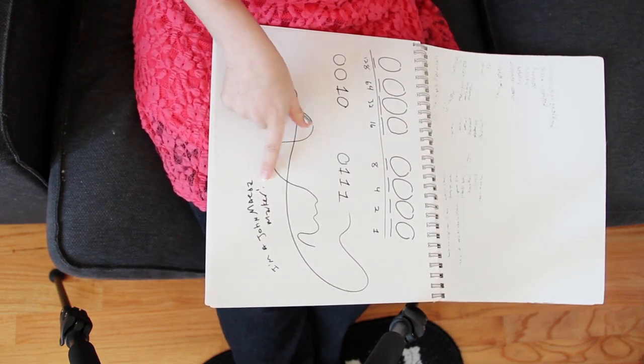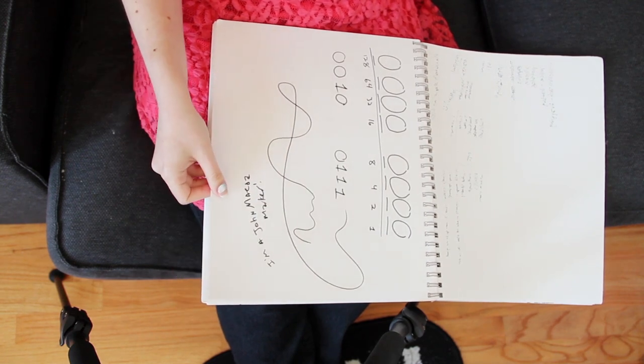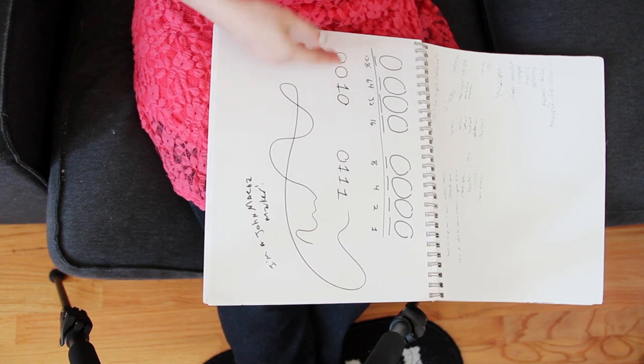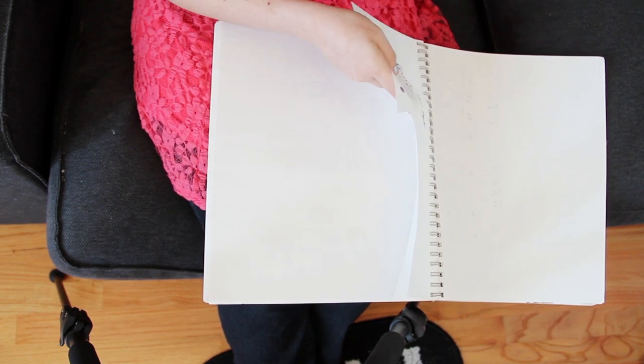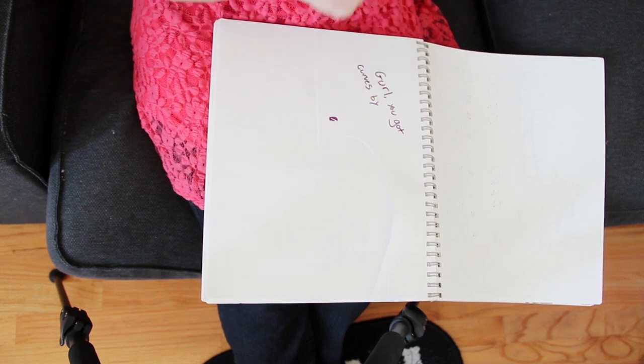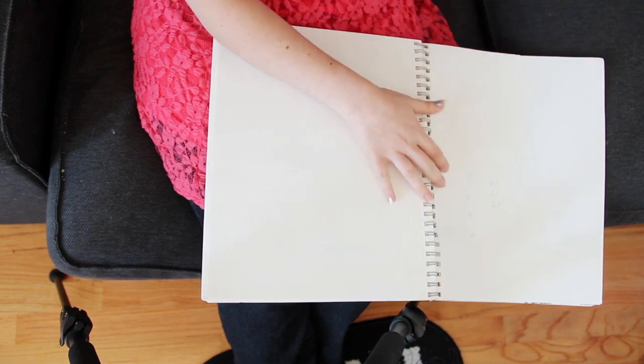And then this says, I'm a John Maeda marker, because John Maeda, who's the president of RISD, once gave me a thing of markers that I kept in my college dorm room, and I guess we used them to draw this. Cut out piece of paper, and it says, Girl, you got curves, bye. I don't know what that means. I have no idea what this piece of paper symbolizes.